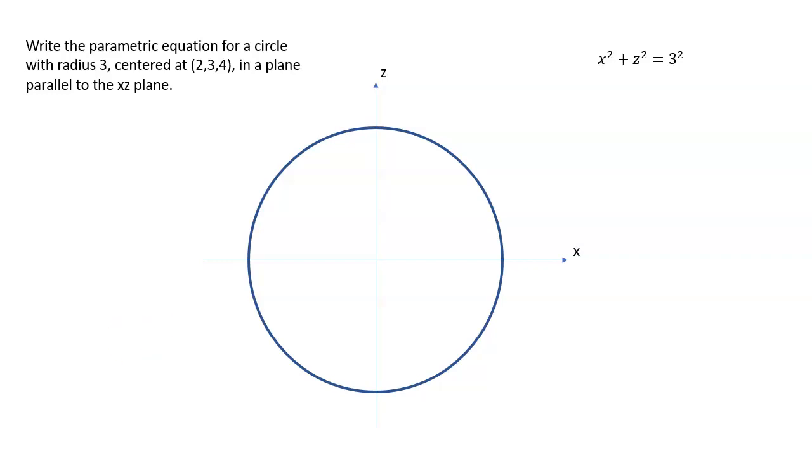So the way we're going to do that is relate it back to our trig knowledge. We're going to treat t as if it was the angle here. Remember that the coordinates of a point on a circle at an angle of t are r cosine theta and r sine theta, or if we're using t as the angle, r cosine t and r sine t.